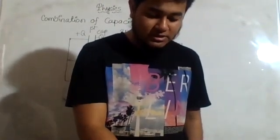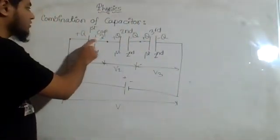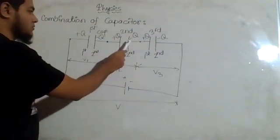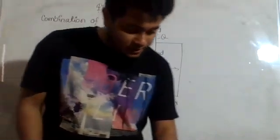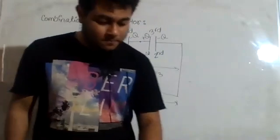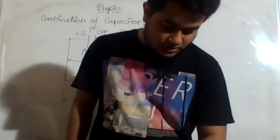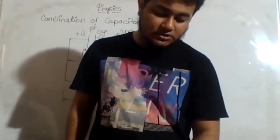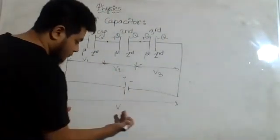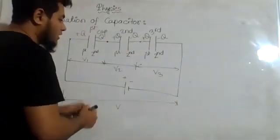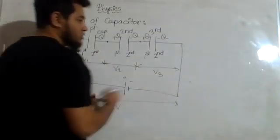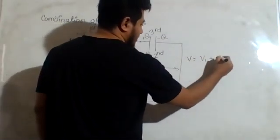So, one plate of each capacitor gets plus Q charge and one plate will become minus Q charge. If V1, V2, V3 are the potential differences between the plates of each capacitor, these are the potential differences which will be causing the electron flow — or current flow, we can say. The potential difference of the first plate and the last plate of the series combination would be V. We know that this total potential difference has been divided between them, so if I combine them I should get the total potential difference. So V will be equal to V1 plus V2 plus V3.